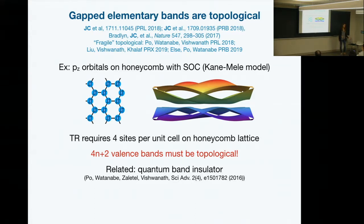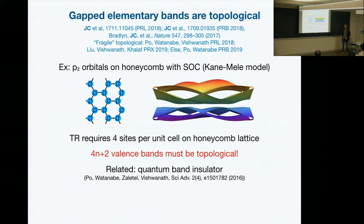We found a couple of examples of this. Some places are more useful to look than others. Our original paper has examples of materials found in this way. This idea has led to a plethora of interesting follow-up papers — in particular, the idea of fragile topological insulators, which Eslam was mentioning earlier. We thought it was a good idea to try to find materials in this way, and we had some small success with it.